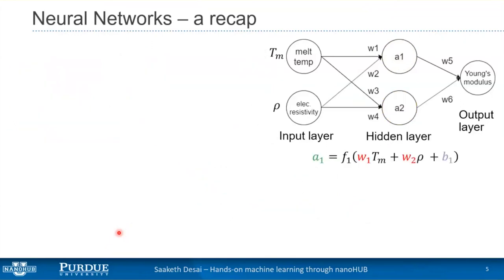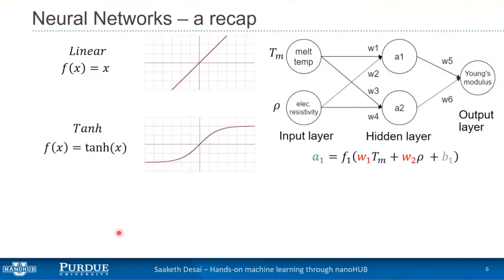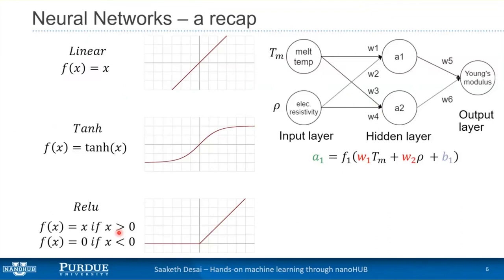We looked at some activation functions. Last time we used the ReLU activation function. Activation functions introduce nonlinearities. You can have a linear activation function, which does nothing — it takes the inputs and spits out the same output. You can have hyperbolic tangent, which compresses inputs between minus 1 and 1. You can have sigmoids, and the one we used last time — ReLU, or Rectified Linear Unit — which suppresses inputs if they are less than zero, and passes them through if they are positive.